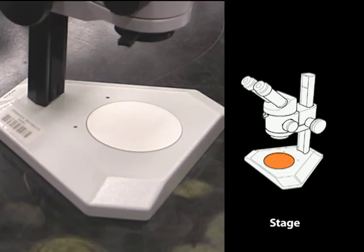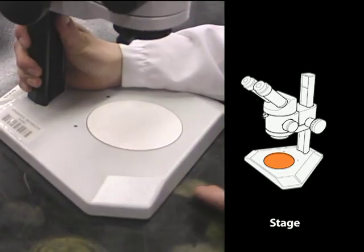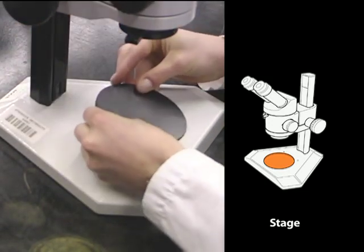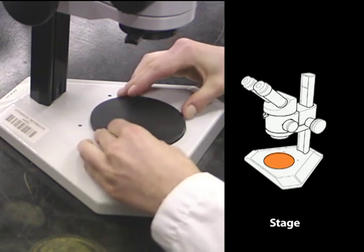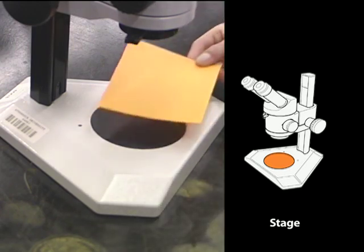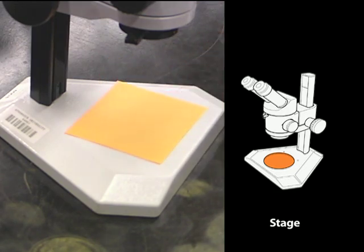The stage is where you place the object that you wish to view. The color of the stage may be important for you to clearly see the object. For reflected light, there is often a reversible stage plate. You can also place a piece of colored paper on the stage to change the background color.